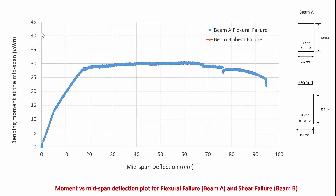This is the moment versus mid-span deflection plot for the flexural tension failure, and if we compare this with the shear failure we can see a distinct difference. The flexural tension failure is a very ductile failure characterized by a large yield plateau. Whereas in the shear failure, as soon as it reaches the maximum bending moment of around 38 kilonewton meters, it abruptly fails. The deflection in the shear failure is very small compared to what we saw in the flexural failure.